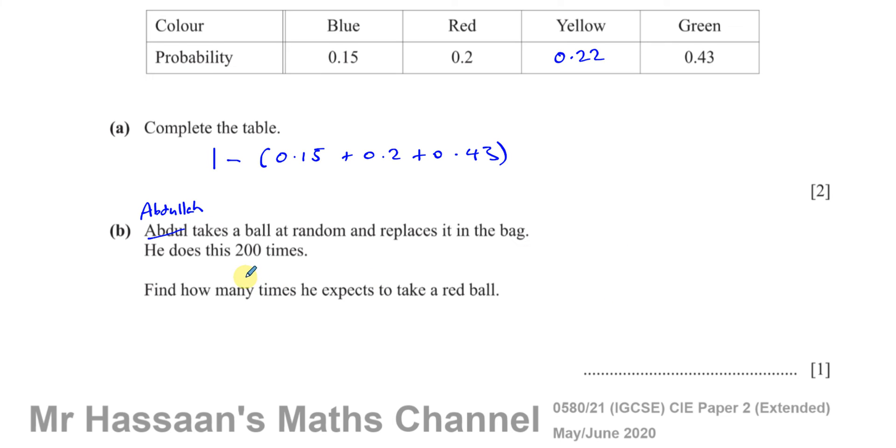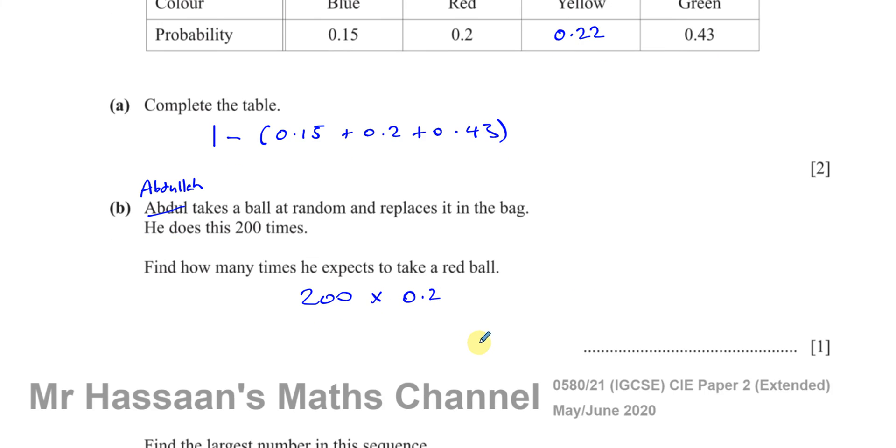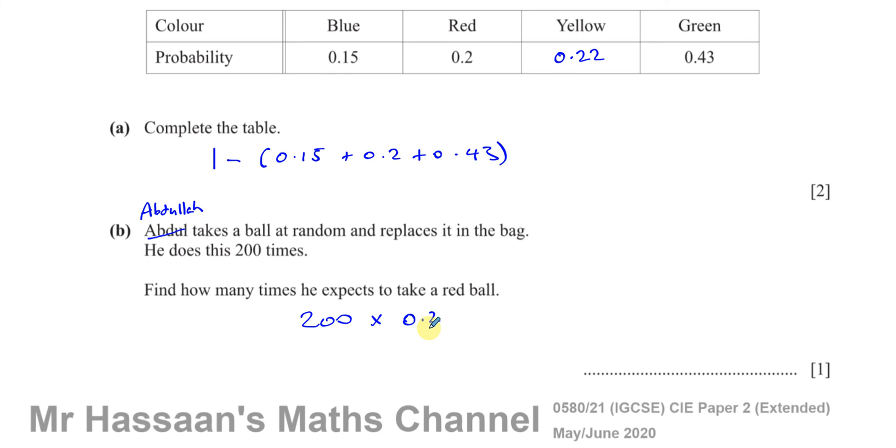So if you want to find how many times you would expect to get a red ball, you take your 200 and multiply it by the 0.2. That will give you the number of times you would expect to get the red ball. You might not get it exactly that amount of times, but it might be close to it. The more times you do it, the closer you will get to the theoretical probability.